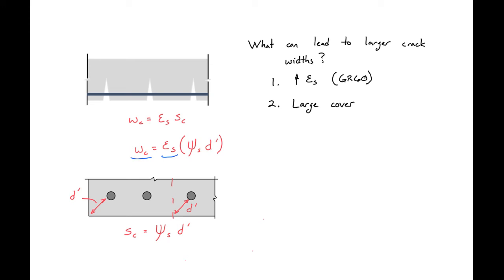The second thing that's going to lead to larger crack widths is if we have a large cover. The cover is the distance from our exterior bar to the outside of our concrete. If we have a larger cover, we're going to have a larger d prime, which will lead to larger crack widths. As a designer, this is something that we can modify to a certain extent. We can decrease our cover values to be close to our design limits, and that will help us have narrower cracks.